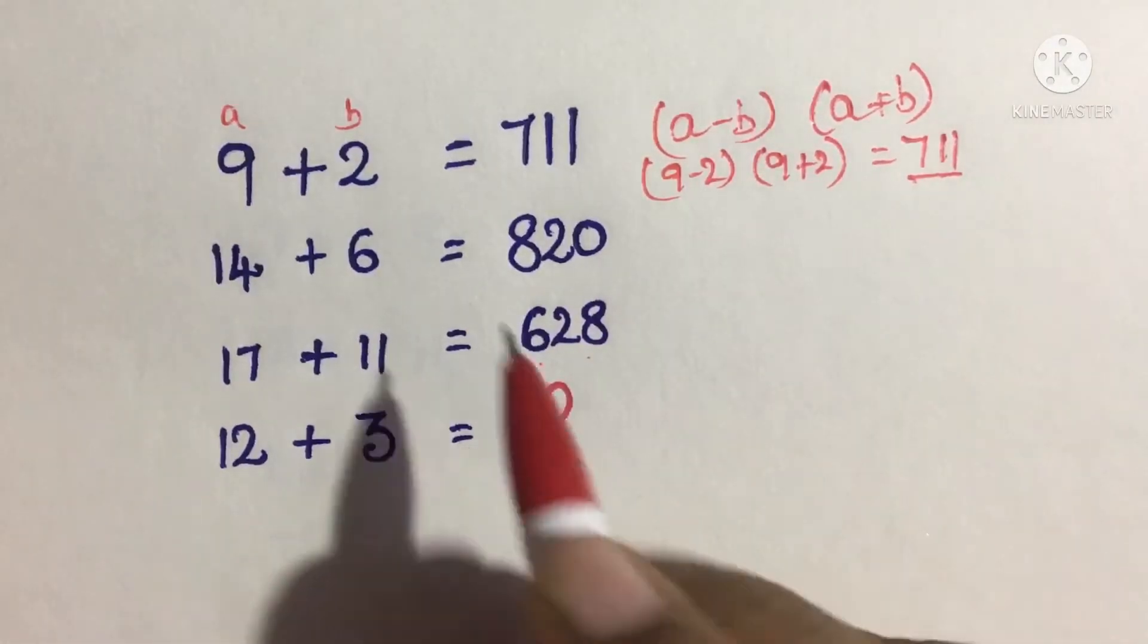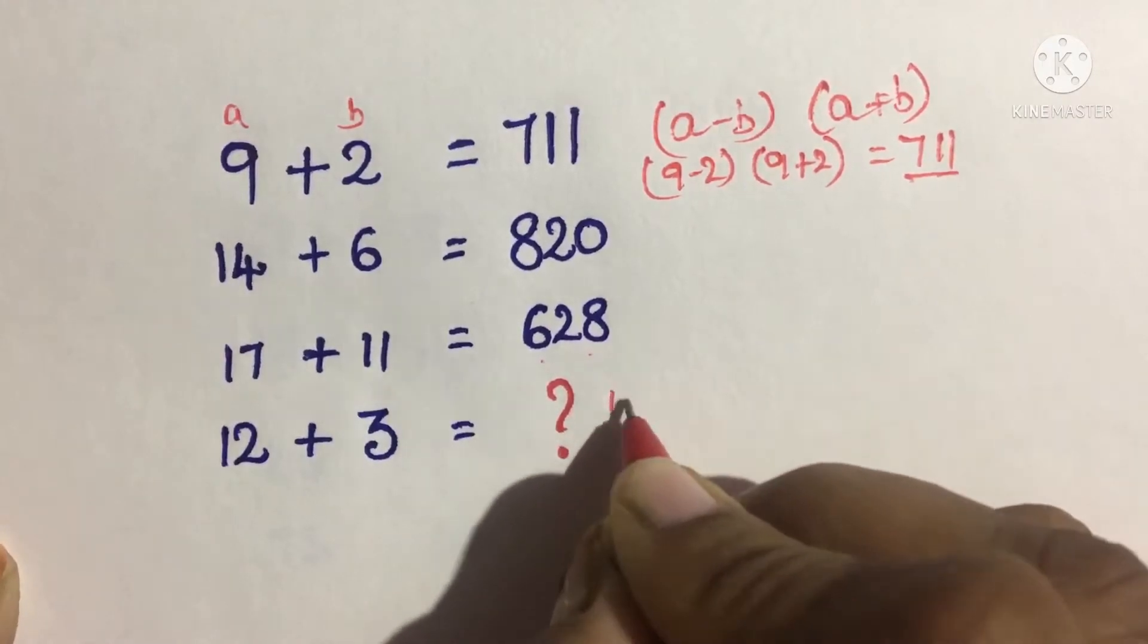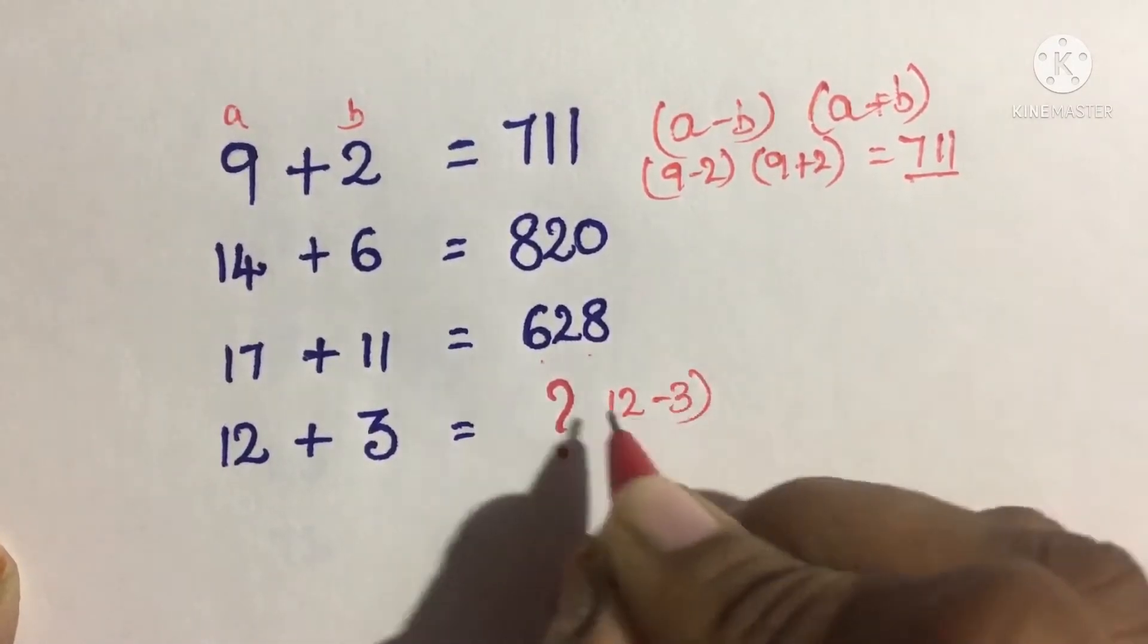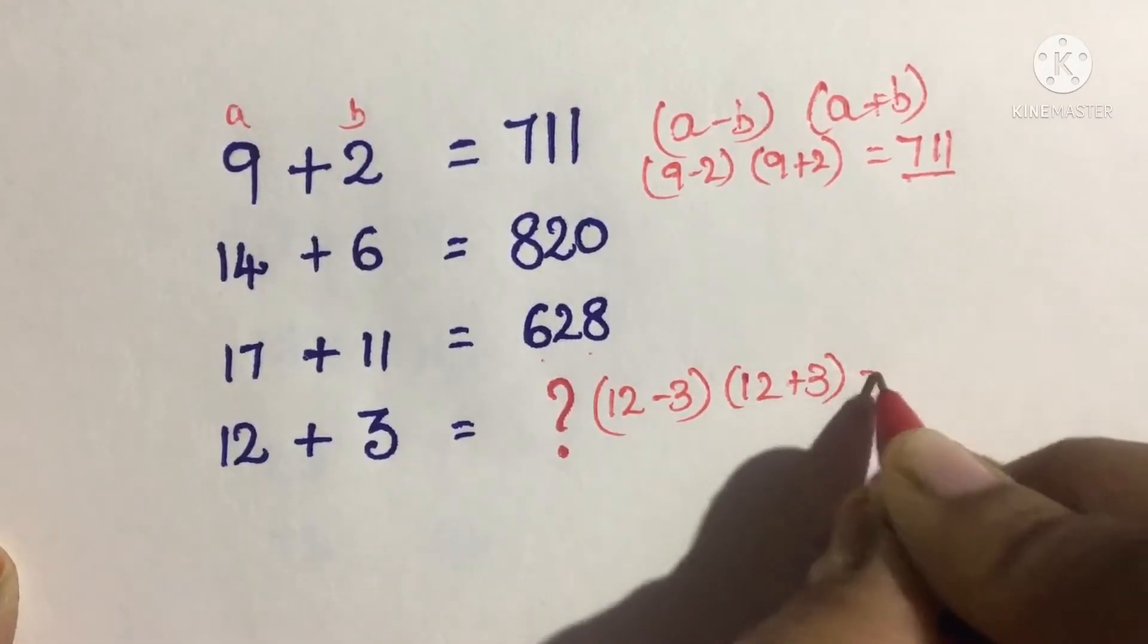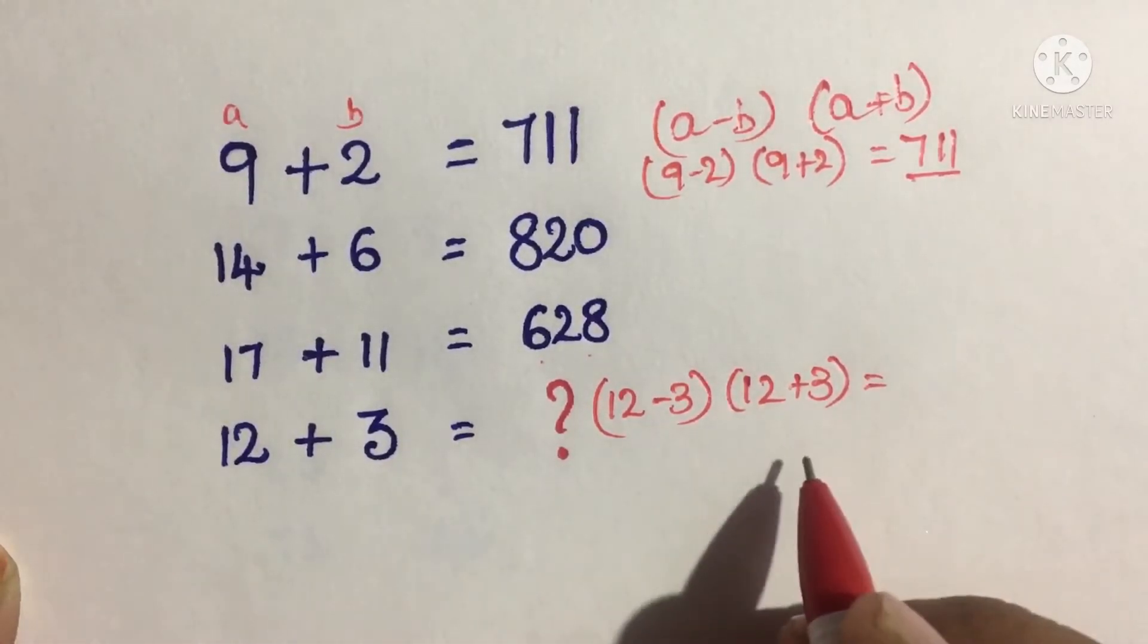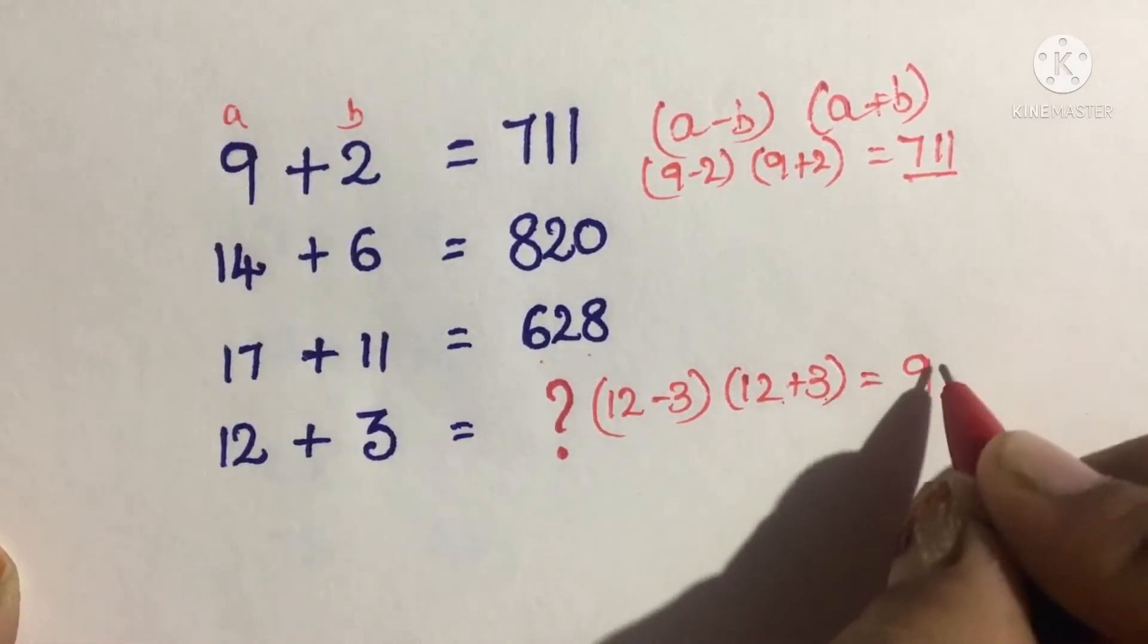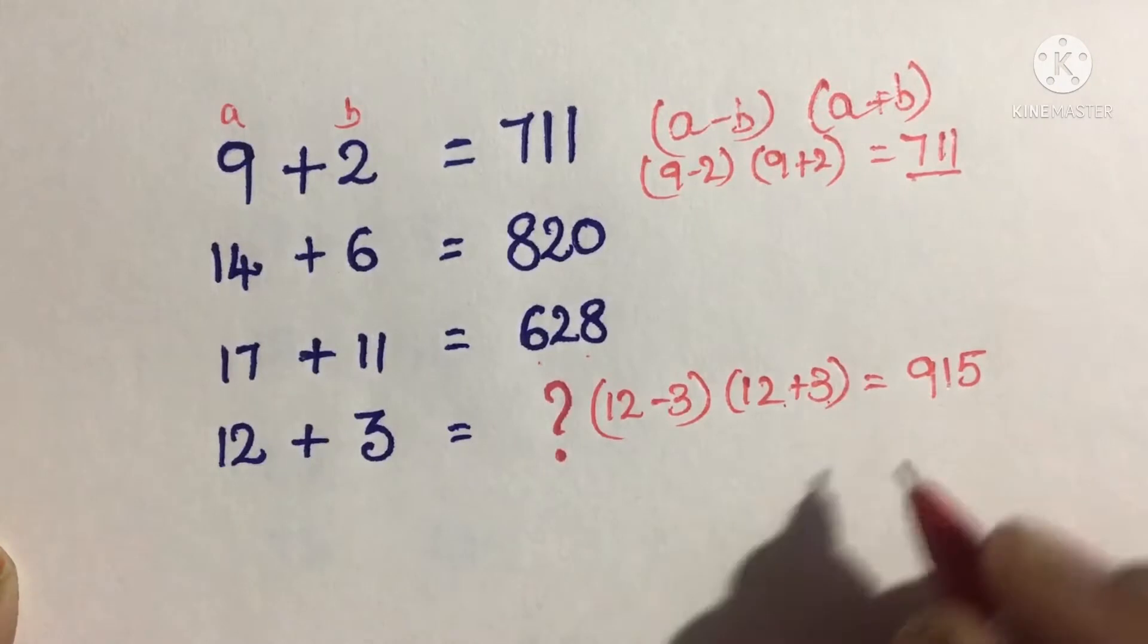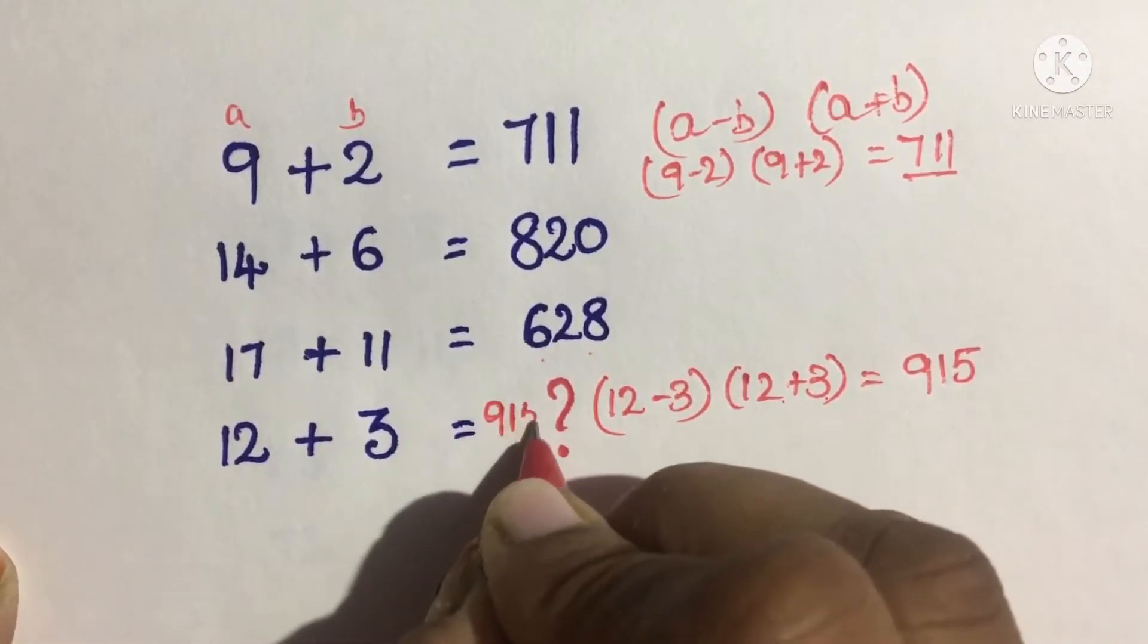Let me check the solution for the question. 12 minus 3 is 9, and 12 plus 3 is 15. So the answer is 915.